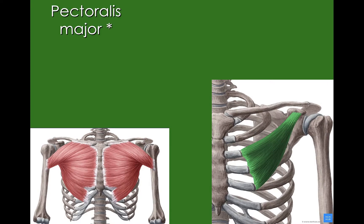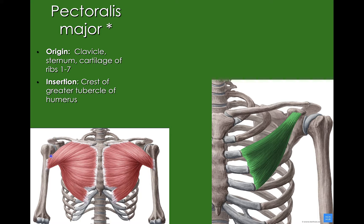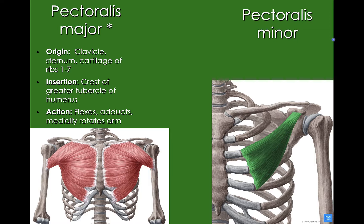We have two different muscles here. Our first is our pectoralis major. Again, a really large origin: our clavicle, sternum, and cartilages along ribs one through seven, with a smaller insertion on the crest of the greater tubercle on our humerus — a lot of force on that insertion. This muscle is responsible for flexing, adducting, and medially rotating our arm. The pectoralis minor is deep to our pectoralis major. It can depress the scapula and even raise our ribs three through five.